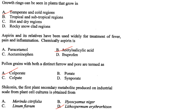Shikonin, the first plant secondary metabolite produced on an industrial scale from plant cell cultures, is obtained from Lithospermum erythrorhizon. That concludes this question paper.